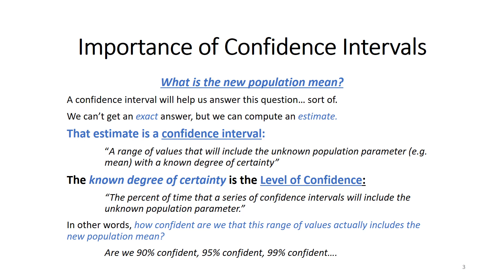That known degree of certainty is what is called the level of confidence. The technical definition of the level of confidence is the percent of time that a series of confidence intervals will include the unknown population parameter. In practical terms, how confident are we that this range of values actually includes the new population mean? Are we going to be 90% confident, 95% confident, 99% confident, or some other value? We can never be 100% confident.